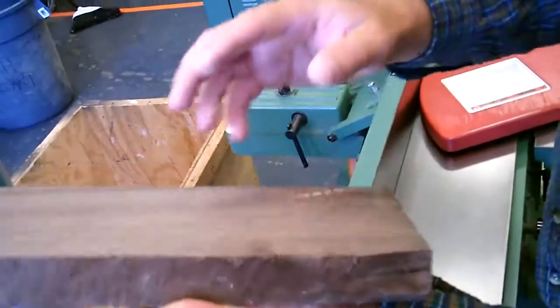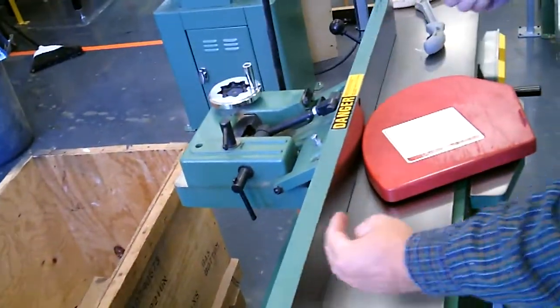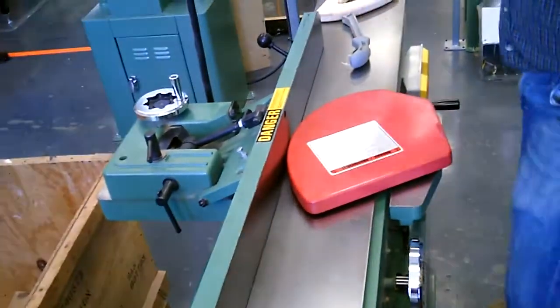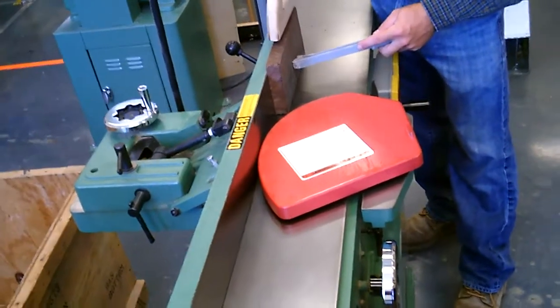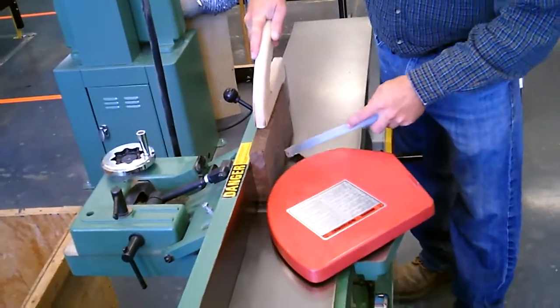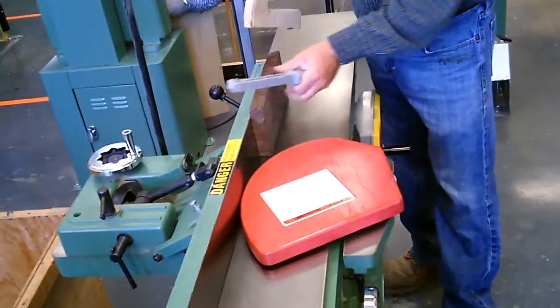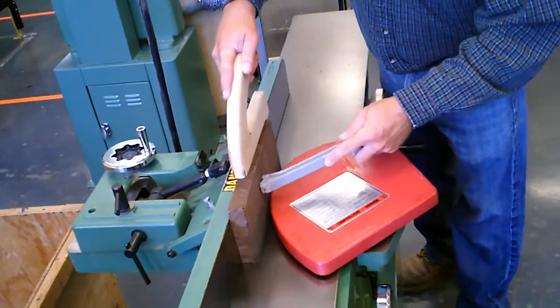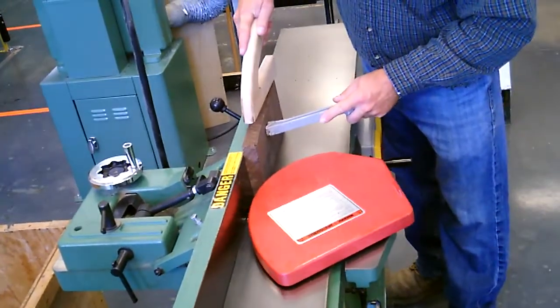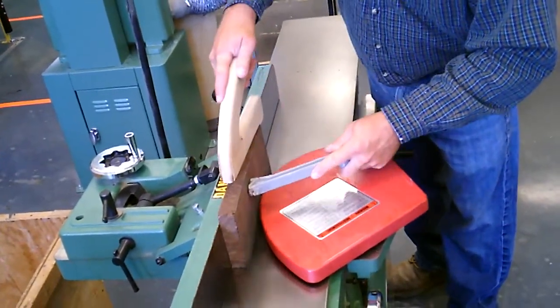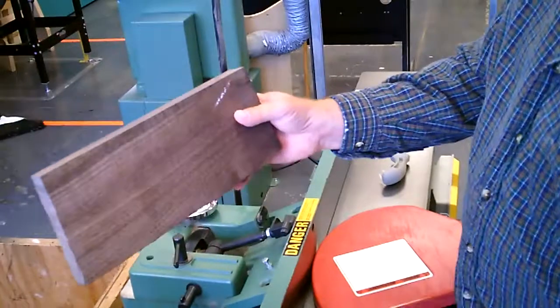Now before we go to the planer and bring it down to the thickness, you can also make one side 90 degrees to the board. So the fence is 90 degrees to the outfeed table. You can push the board against the fence, push block, and keep taking a cut. One more, until it's 90 degrees. So the board is perfectly square.